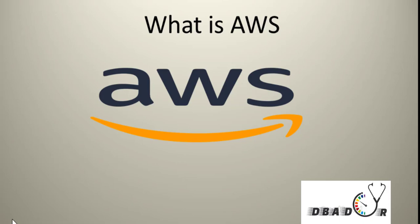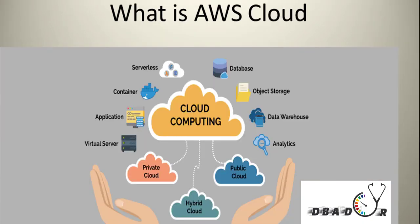Some services even provide billing by the millisecond. AWS also provides great economies of scale because the cost of infrastructure is spread across thousands of enterprises globally. That is great because you don't have to worry about capital expenditure for your own infrastructure, and you don't have to worry about infrastructure maintenance staff to support it.